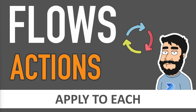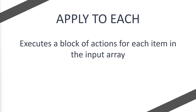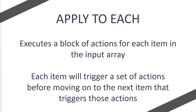Today we're going to look at the Power Automate flow actions, specifically the Apply to Each action. Microsoft states that Apply to Each executes a block of actions for each item in the input array. Essentially, each item in an array will trigger a set of actions before moving on to the next item, which will then trigger those same sets of actions.